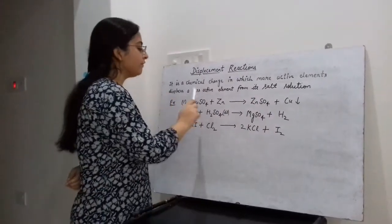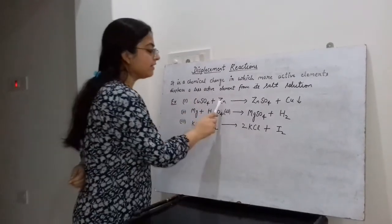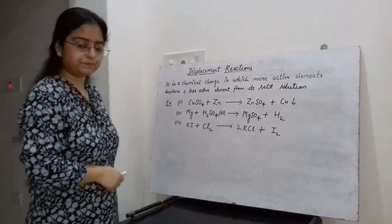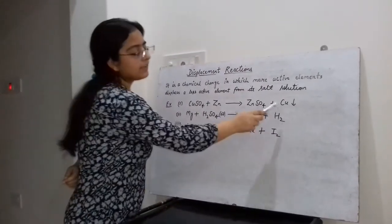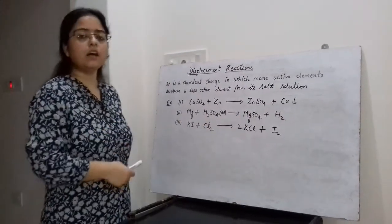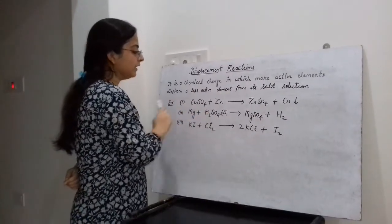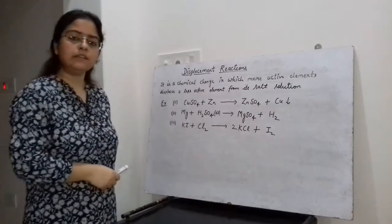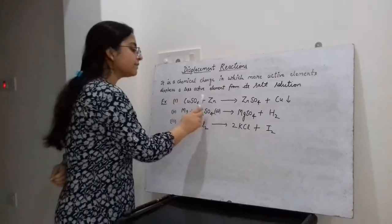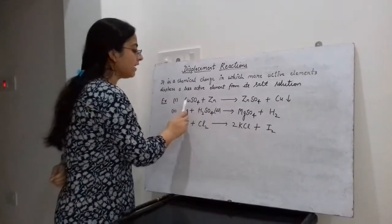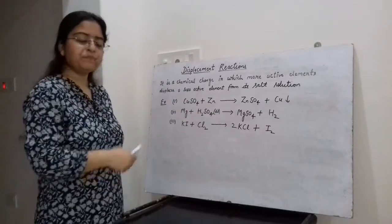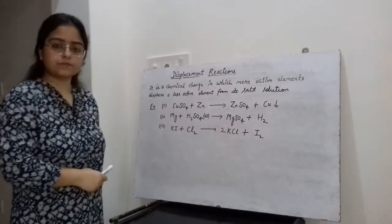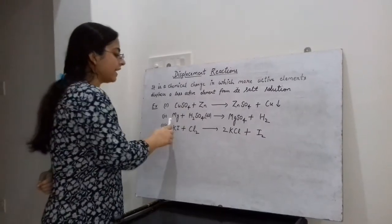When copper sulphate solution is taken in the beaker and zinc pieces are added to it, then after stirring, the colour changes due to the formation of zinc sulphate, which is a colourless solution, and reddish-brown particles of copper settle down in the beaker. We observe that copper is displaced by zinc and zinc sulphate is formed, meaning zinc is more reactive than copper. Zinc has displaced copper from copper sulphate solution, forming zinc sulphate which is colourless.